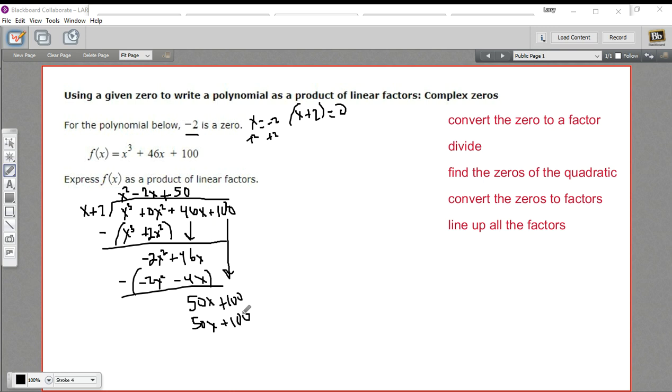Oh, I'm sorry. I forgot because when we subtract this, we have a remainder of zero. So that shows x plus two is indeed a factor of this. And we're left with this quadratic x squared minus two x plus 50.